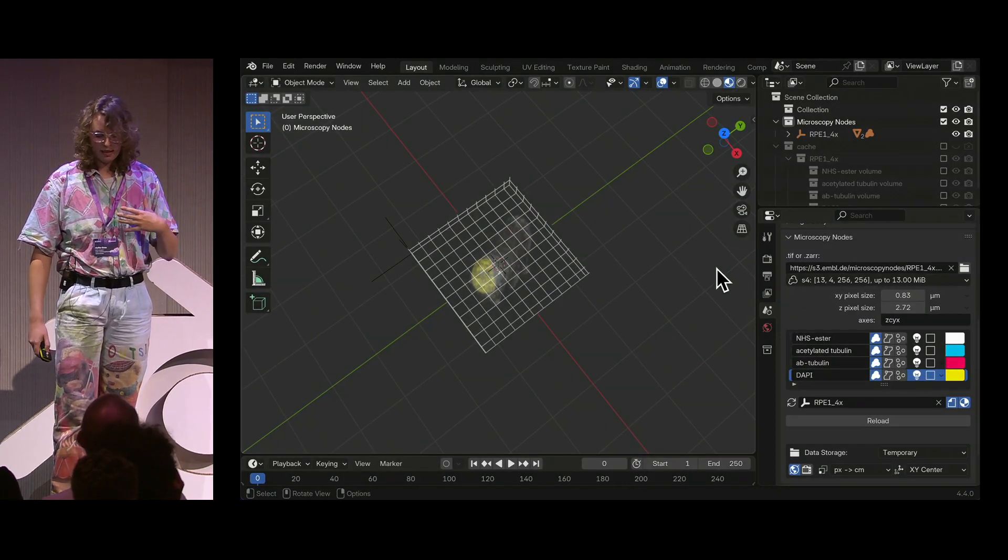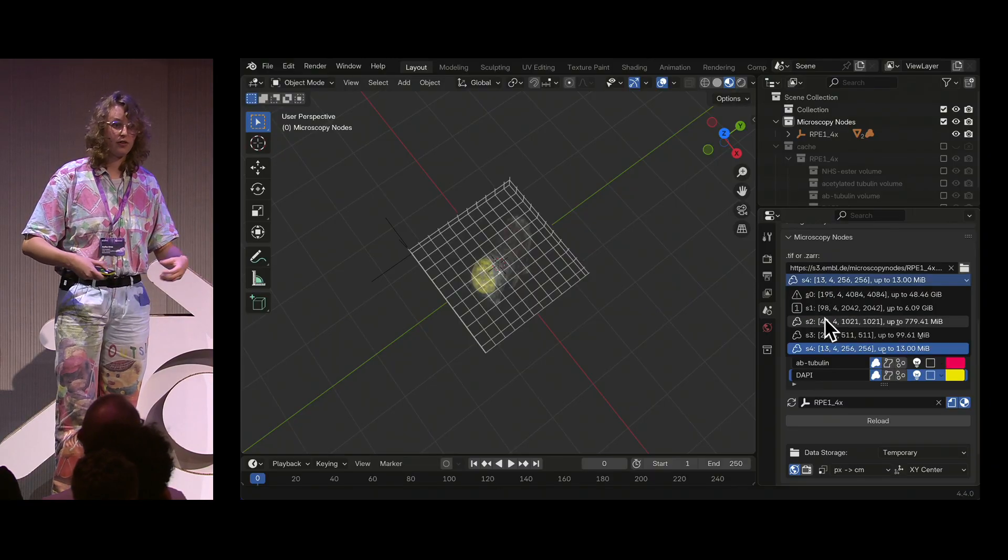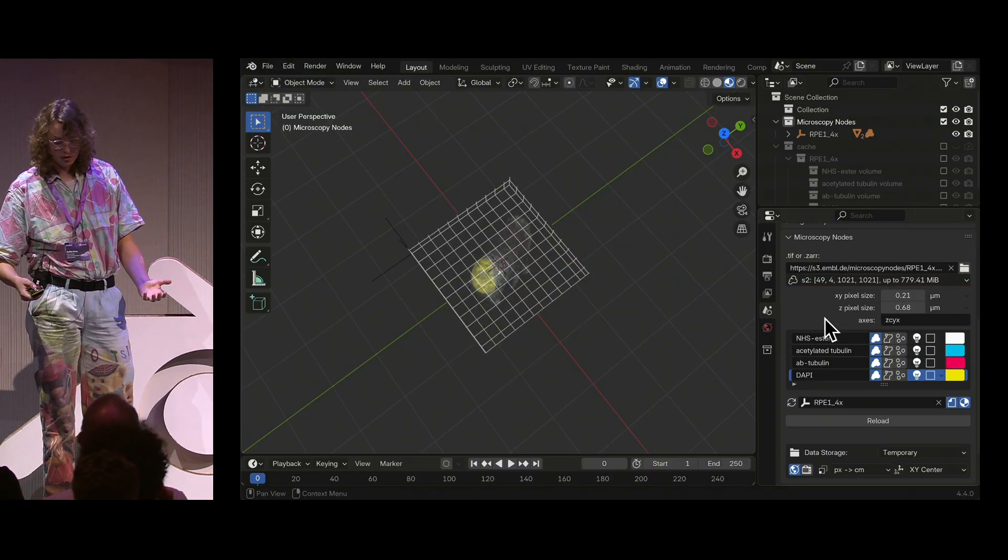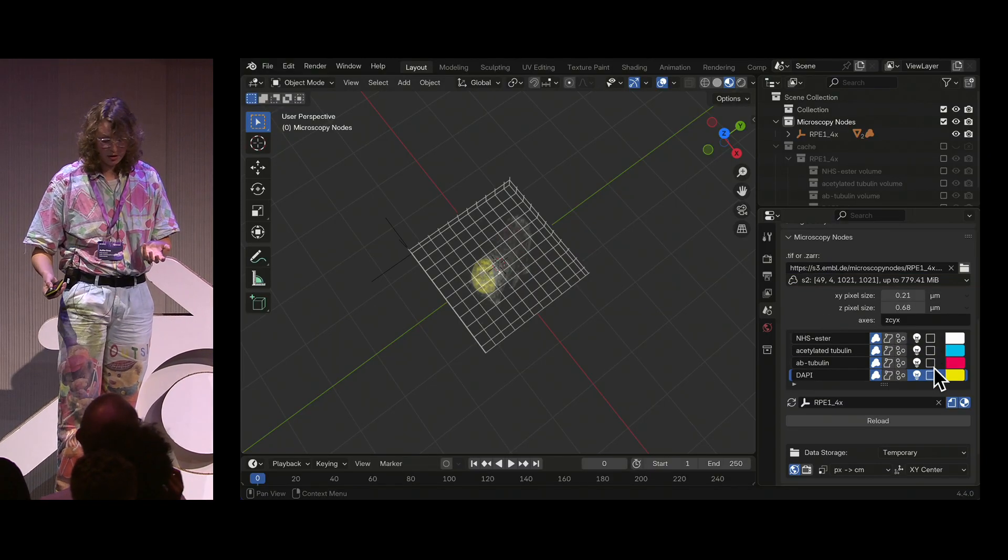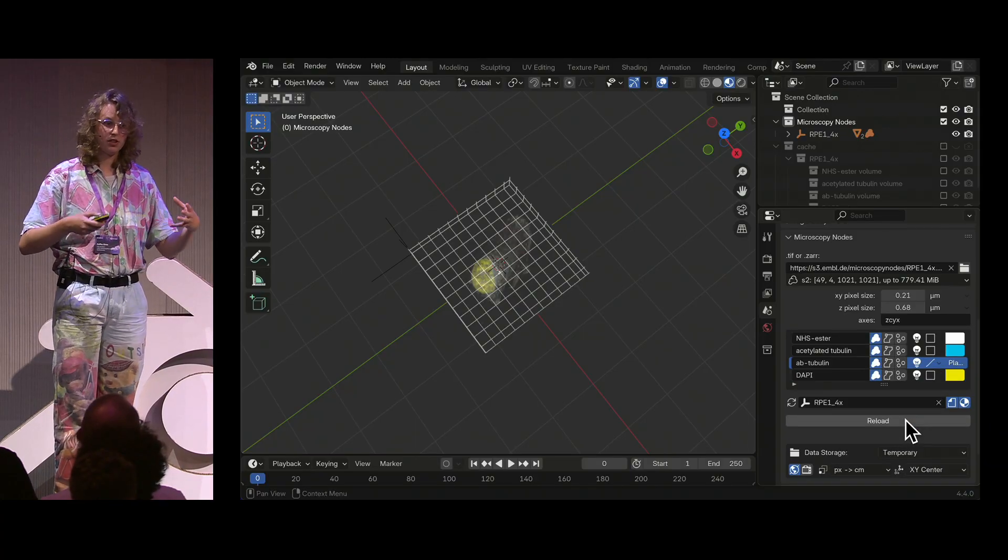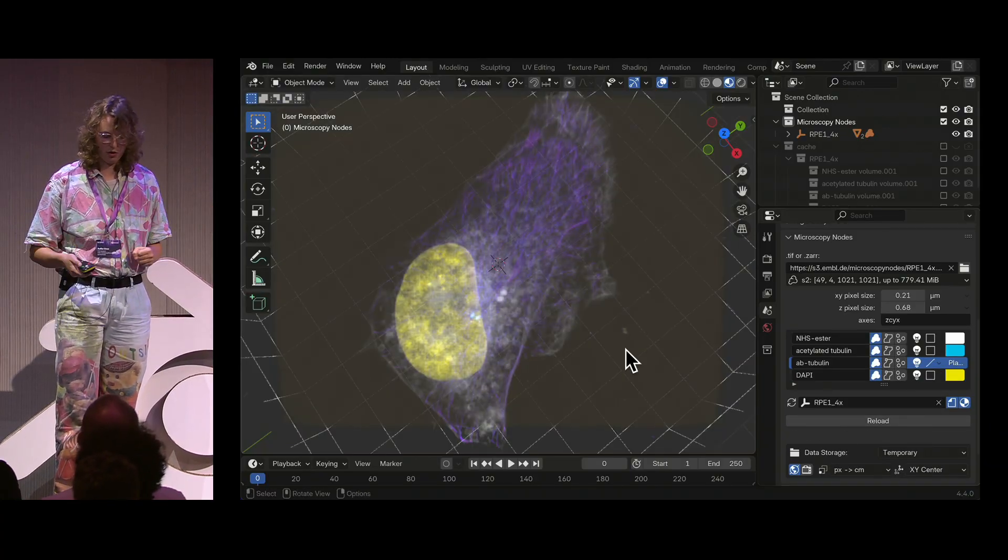And this doesn't look amazing yet, so we can then reload it at a higher resolution, change some of our color maps, and then it will replace our object with this new version.